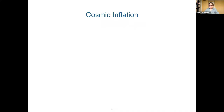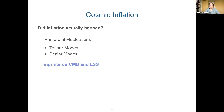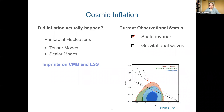Let us take a few minutes to review what we know about inflation and how we can learn more about it. Assuming a phase of accelerated expansion in the early universe offers an elegant solution to the horizon and flatness problems in standard Big Bang theory. The way we can really test whether inflation happened is by constraining the statistical properties of scalar and tensor primordial fluctuations using their imprints on the CMB and large-scale structure. From the latest CMB measurements by the Planck satellite, we know that primordial scalar fluctuations have a nearly scale-invariant power spectrum, and we have an upper bound on the amount of gravitational waves generated during inflation.